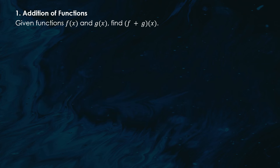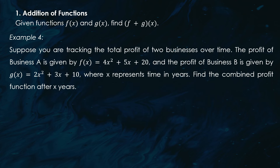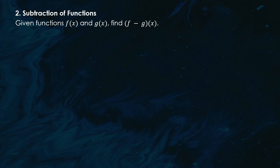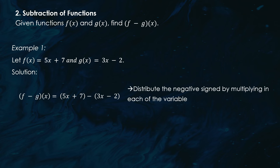Here's a real-world addition example. Suppose you are tracking the total profit of two businesses over time. The profit of business A is f(x) = 4x² + 5x + 20 and the profit of business B is g(x) = 2x² + 3x + 10, where x represents time in years. To find the combined profit, we add the two functions: (f + g)(x) = 4x² + 5x + 20 + 2x² + 3x + 10. Combining like terms gives us 6x² + 8x + 30.